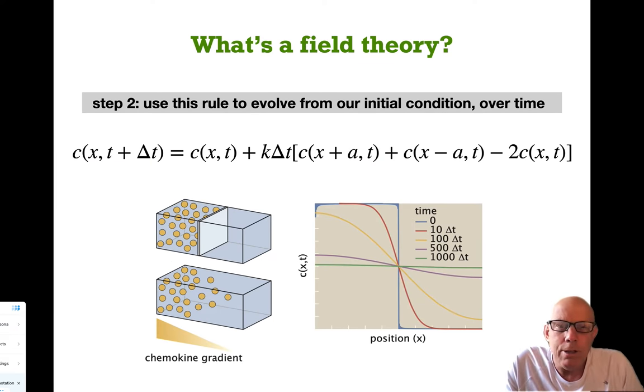We can use this field theory idea to update the concentrations. The initial condition is in blue, then the red curve is a little bit later, the yellow curve is 10 times later than that, the purple curve is five times beyond that, and finally the green curve shows the final saturation or steady state value where the concentration is now uniformly distributed across the whole box.